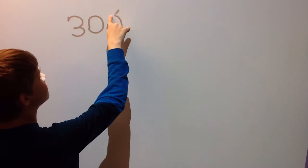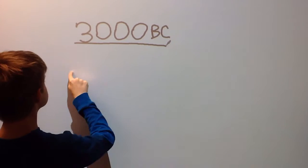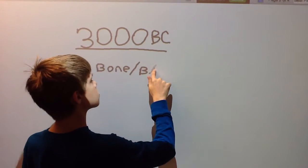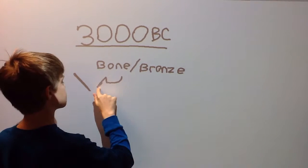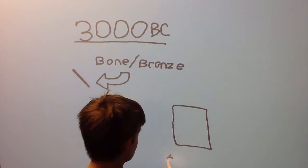In 3000 BC, Egyptians developed a form of writing with pictures. Writing on papyrus scrolls, scribes used thin reed brushes.